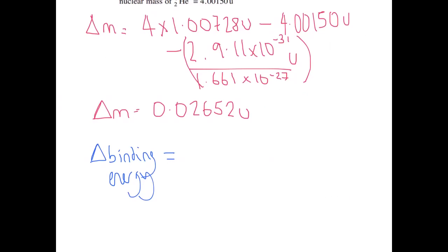So we've got our change in mass. So what we actually want to calculate is our change in binding energy. So obviously to go about doing that, we take our change in mass, and then we multiply by the conversion factor. And this will give us an answer of 24.7 mega electron volts.